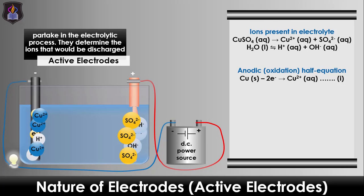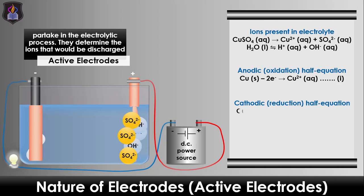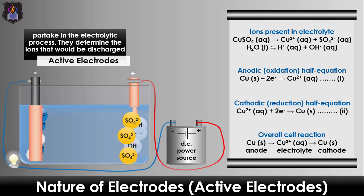At the cathode, the copper(II) ions from the electrolyte gain two electrons and become deposited as copper atoms on the cathode. As the copper(II) ions from the electrolyte are being removed, they are immediately replaced by the copper(II) ions produced at the anode. In the end, it is simply a transfer of copper atoms from the anode to the cathode, as seen in the overall cell reaction.